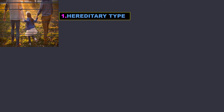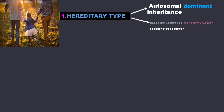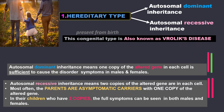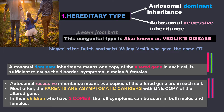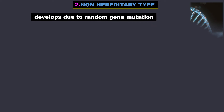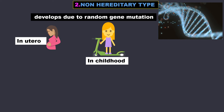OI can be hereditary, inherited from a parent, in the form of autosomal dominant or autosomal recessive inheritance. This congenital type is also known as Rolex disease, named after Dutch anatomist William Rolex who coined the name osteogenesis imperfecta. There is also a non-hereditary type that develops due to random gene mutation, where the gene undergoes a sudden change and stops working normally. This can happen any time in life — in utero, in childhood, or in adolescence.